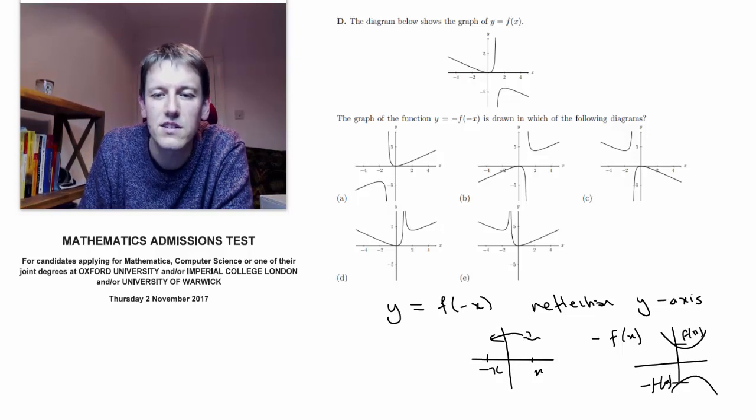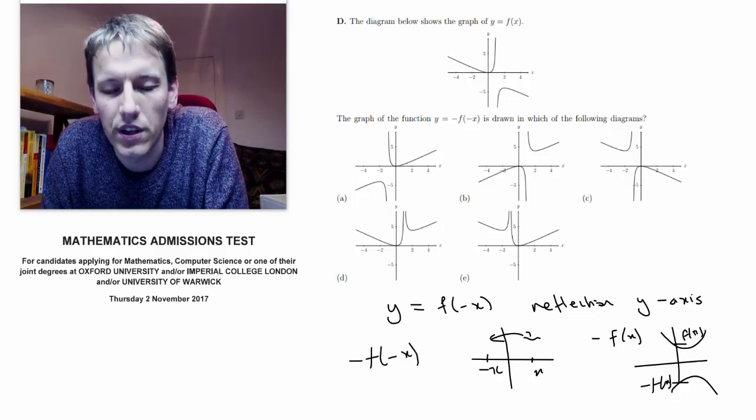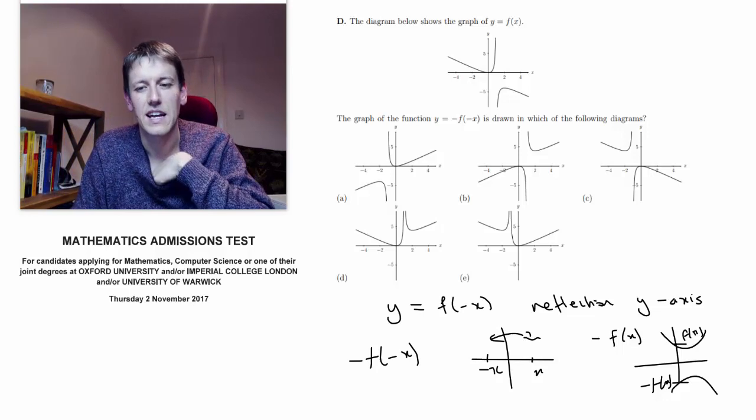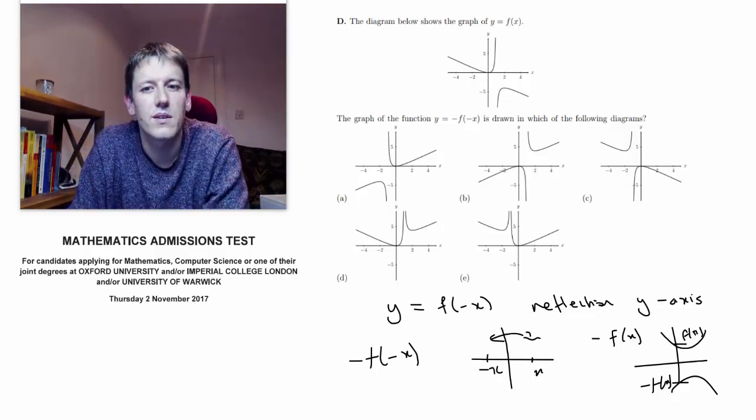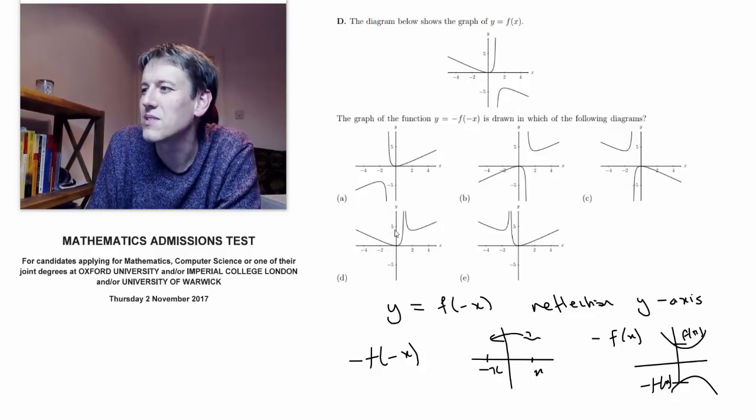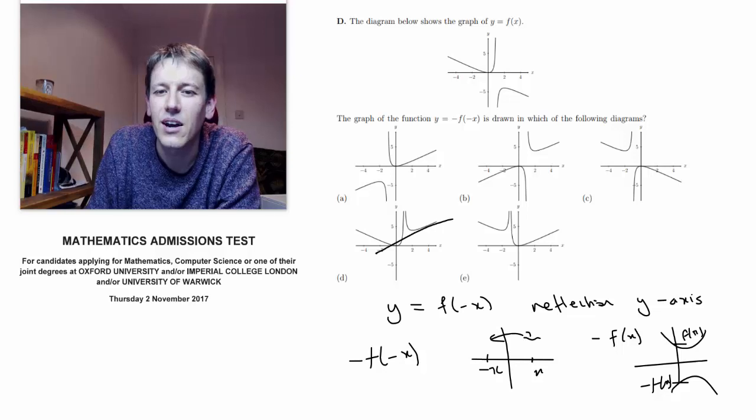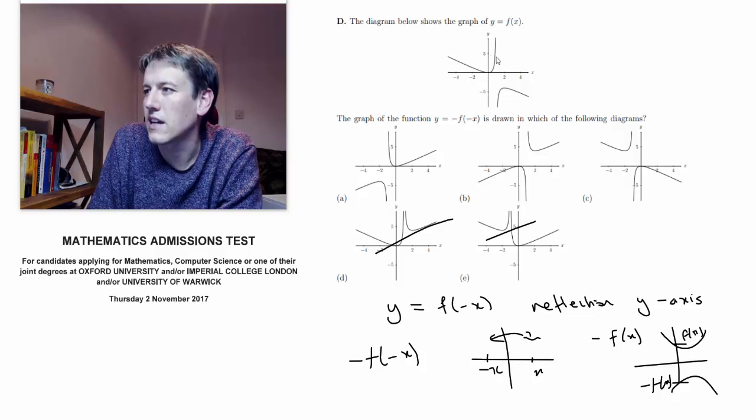So when I do minus f of minus x, that will be a reflection in the y-axis and then in the x-axis. We've just got to see which of these graphs that is, so it's going to be one of the ones that keeps the whole of the graph intact relative to each other. I can immediately discount these two.